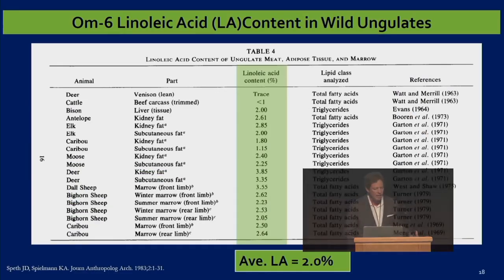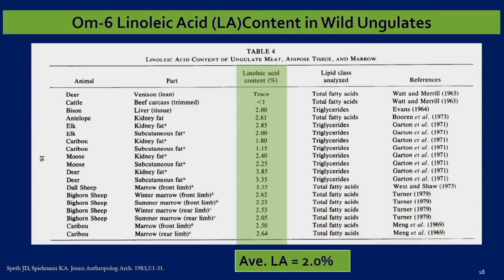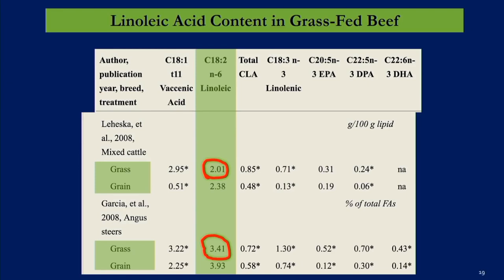When we consume linoleic acid, we tend to accumulate it — we just can't burn all of it for fuel. Here's what we should be eating. This is from Speth and Spielman in 1983 — wild ungulates, wild-hooved animals — and look at their linoleic acid content, highlighted in green. It ranges from trace to 3.85%, with an average linoleic acid of 2%. So this is the level of linoleic acid we should be getting in our diet: around 2%. Grass-fed beef confirms this: 2.01% and 3.41%.